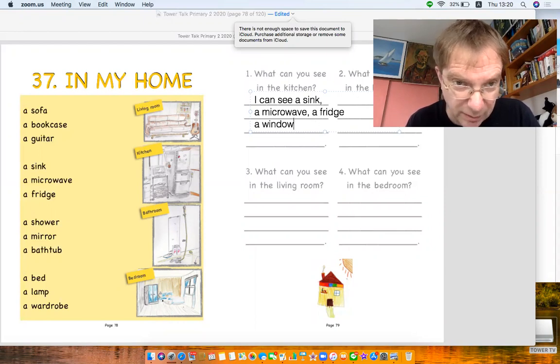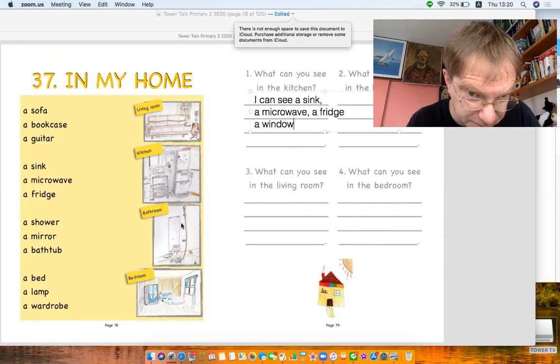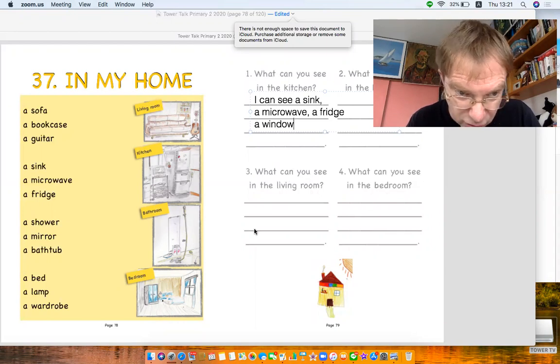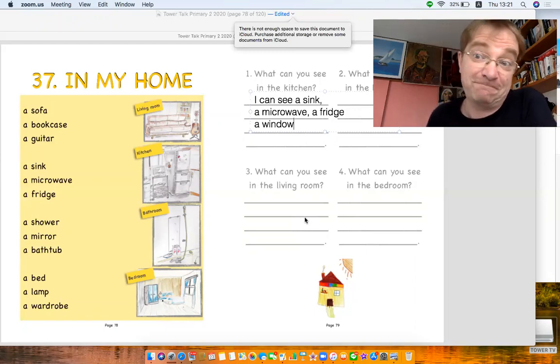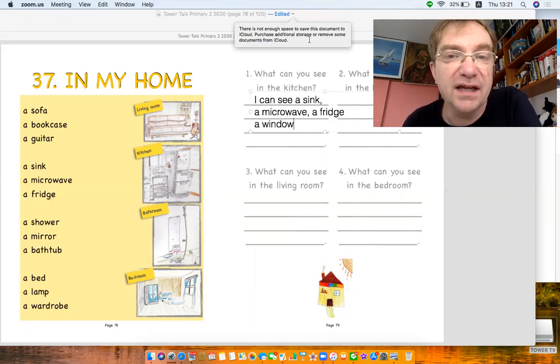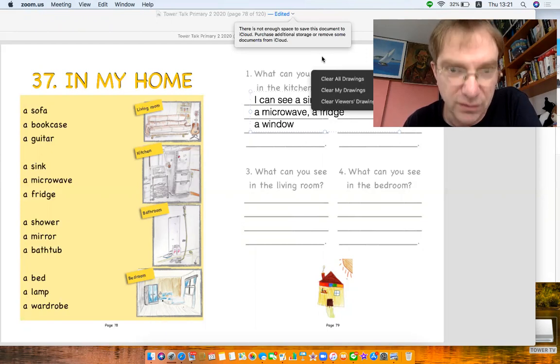I've got number two here. What can you see in the bathroom? The bathroom is here. Number three, what can you see in the living room? Living room. What can you see in the bedroom? Bedroom. Try and put things that you can see. What can you see in your bedroom? What can you see in your living room? Have a go. You can show me when I come back. Can you come back? Okay, I'm going to clear this all.